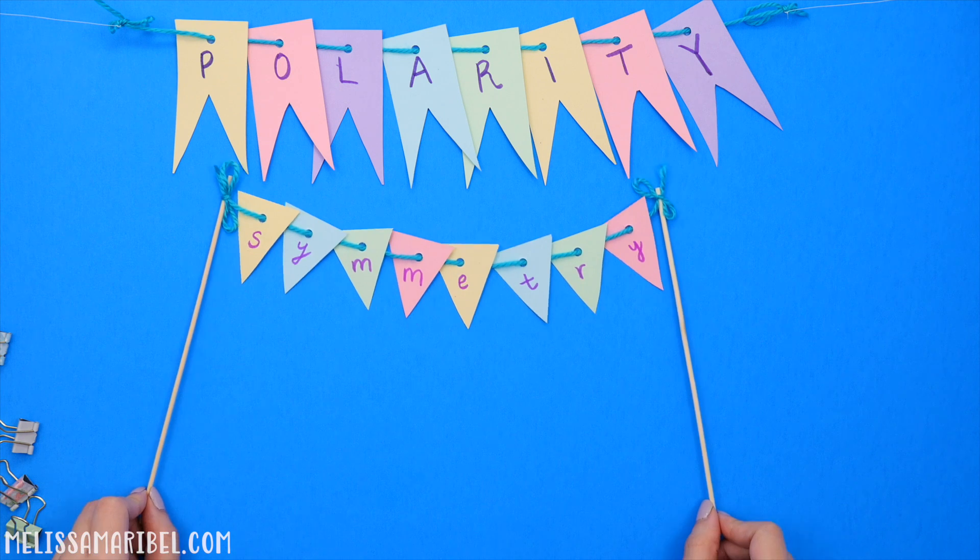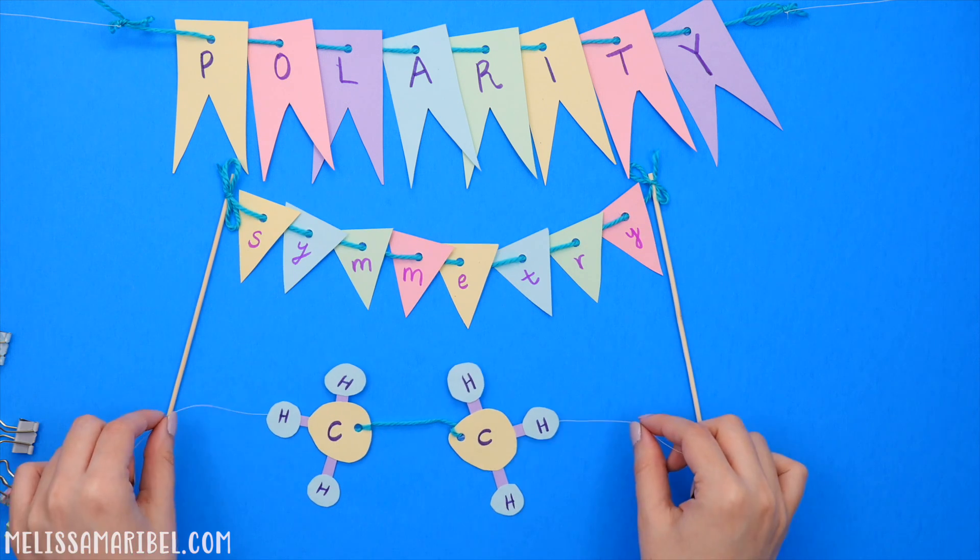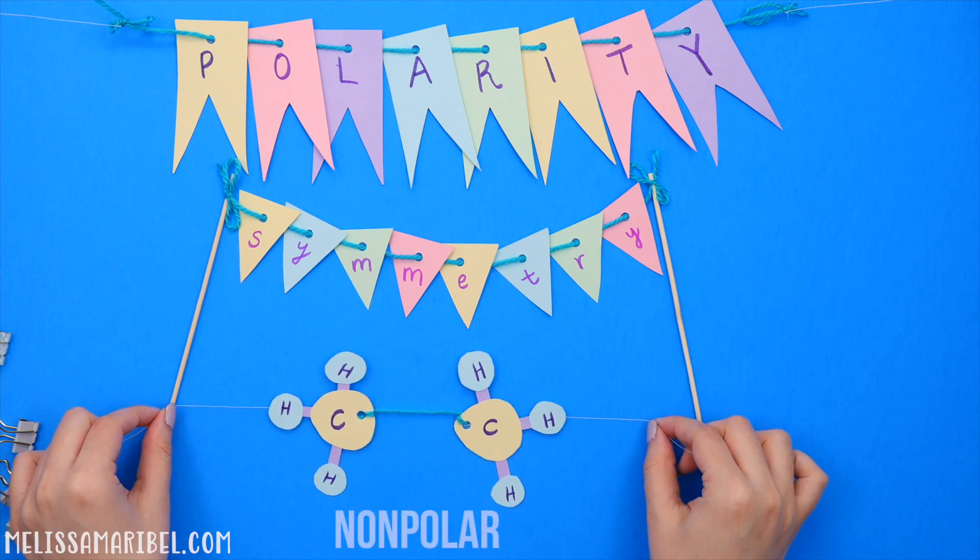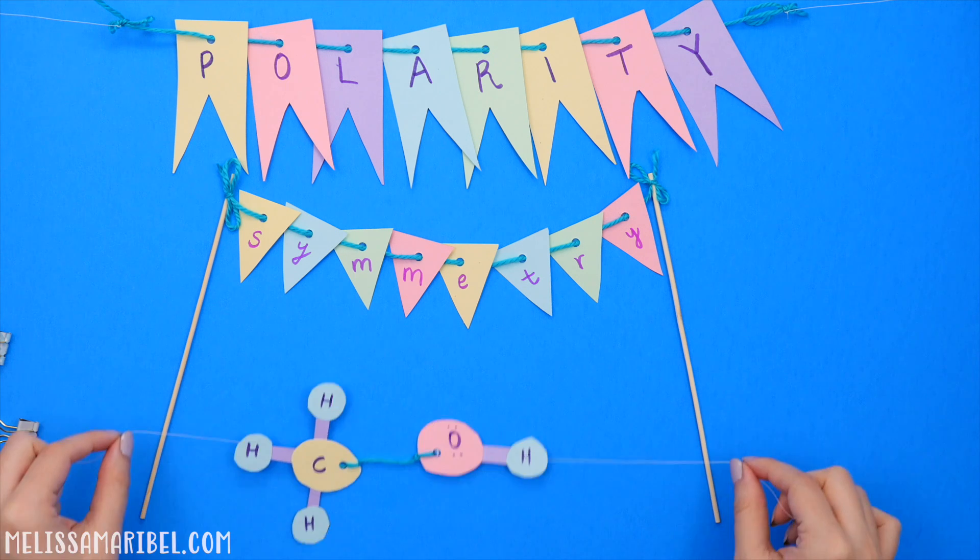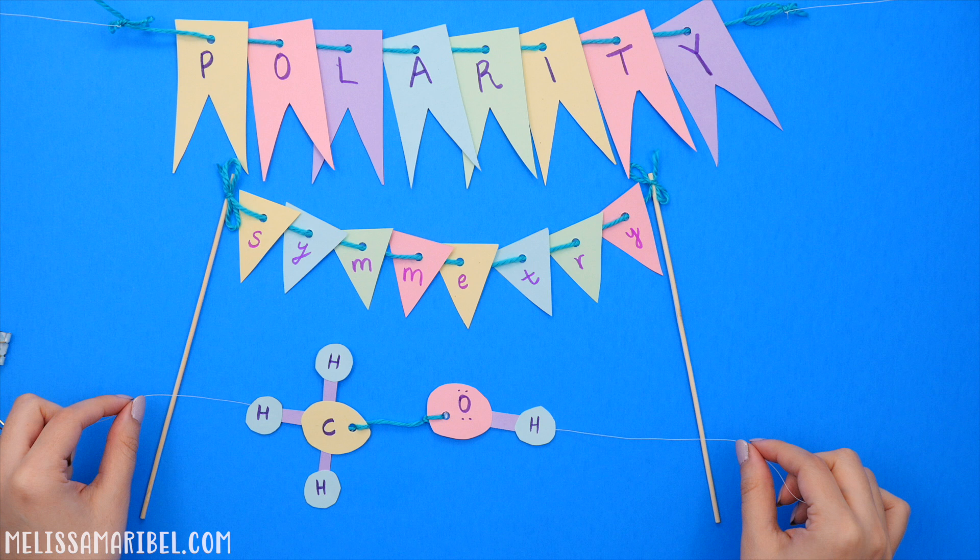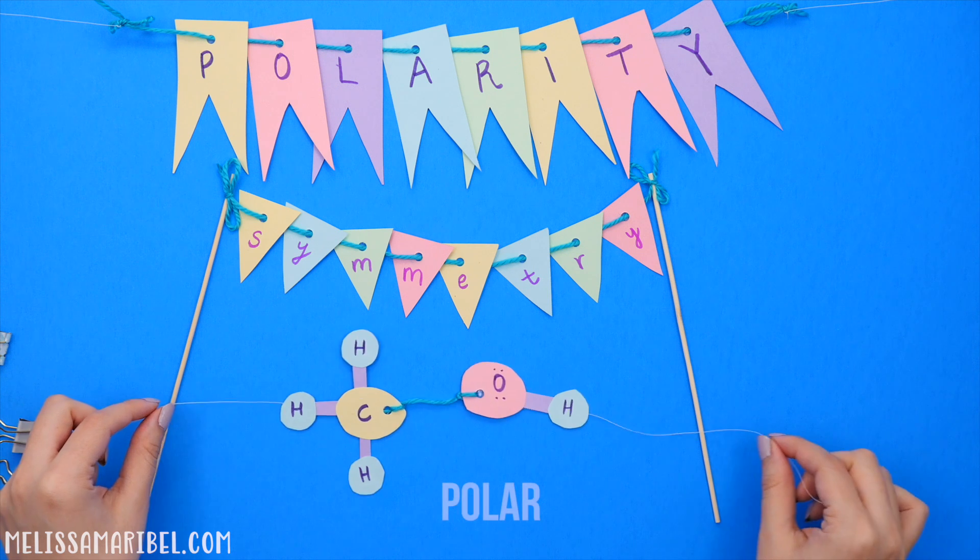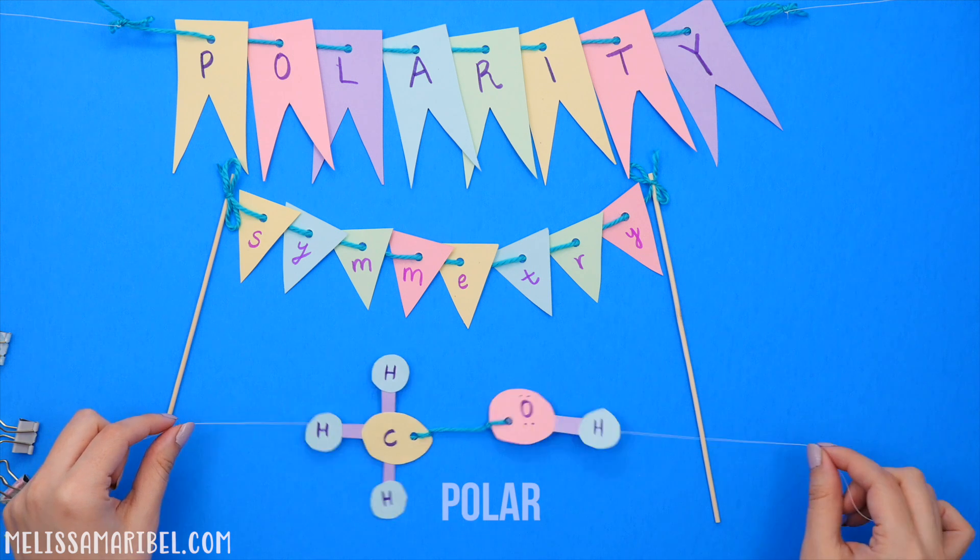First, symmetry. If the structure is symmetrical, then it's nonpolar because there is an equal pull of electrons. If the structure is non-symmetrical, it is most likely polar because there is an unequal pull of electrons.